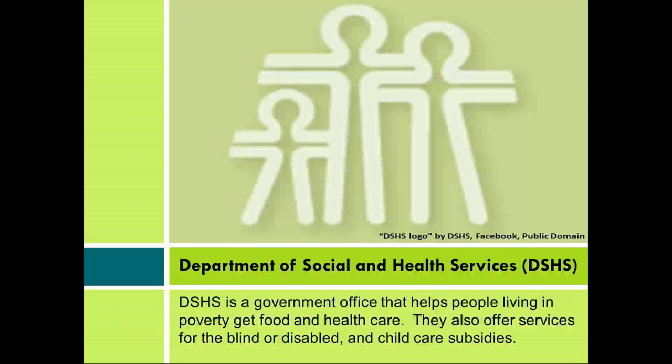Department of Social and Health Services — DSHS. DSHS is a government office that helps people living in poverty get food and health care. They also offer services for the blind or disabled and child care subsidies.